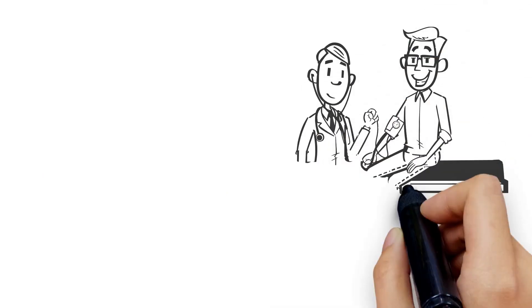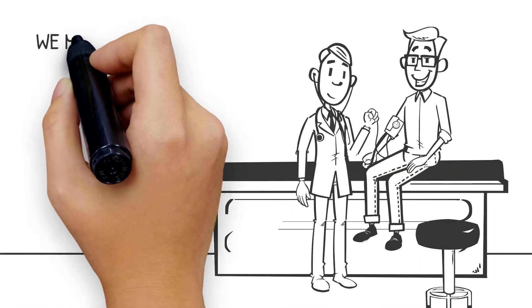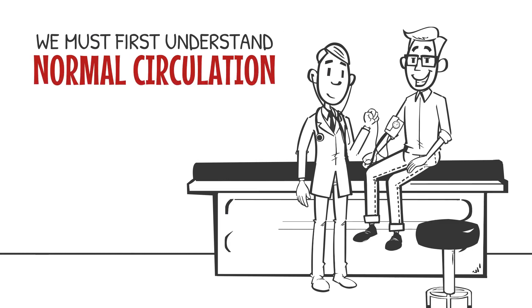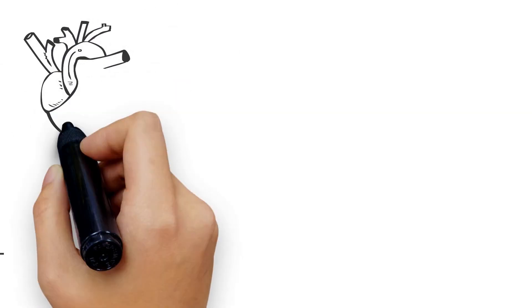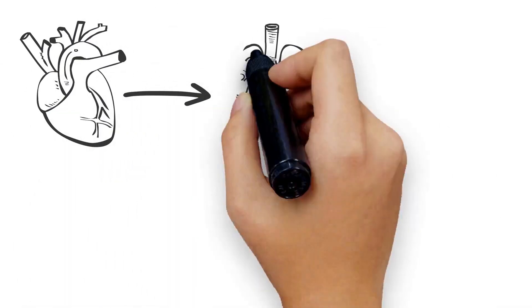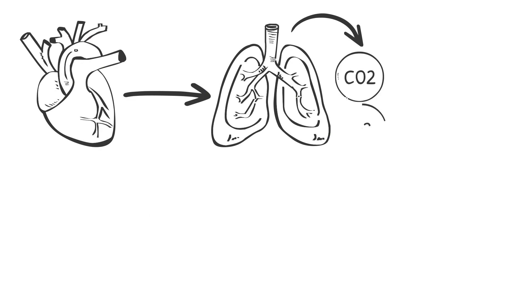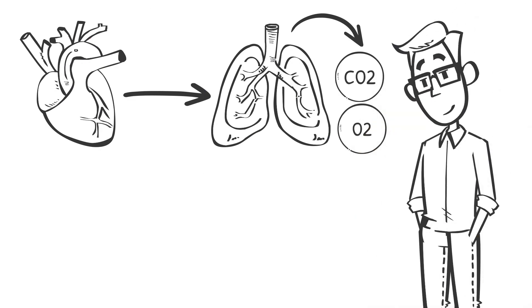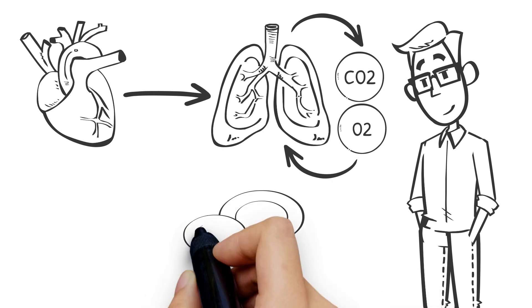To fully understand the benefits of hyperbaric oxygen, we must first understand normal circulation. Our heart pumps blood to our lungs, where carbon dioxide is exhaled and oxygen is inhaled. Oxygen enters our body through our lungs, attaching itself to our red blood cells.